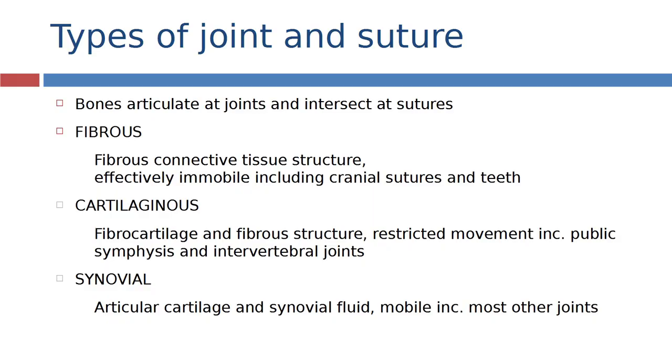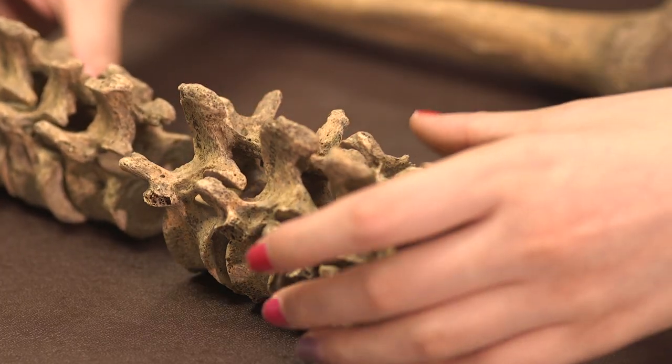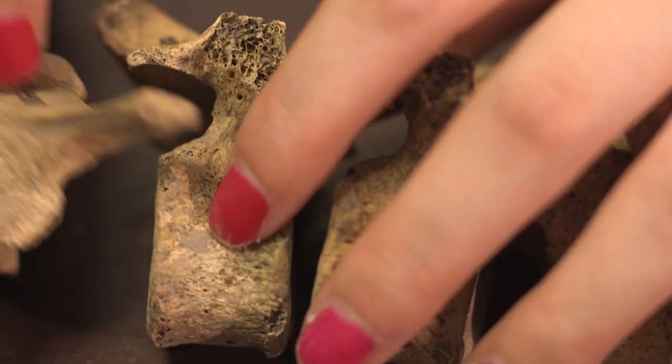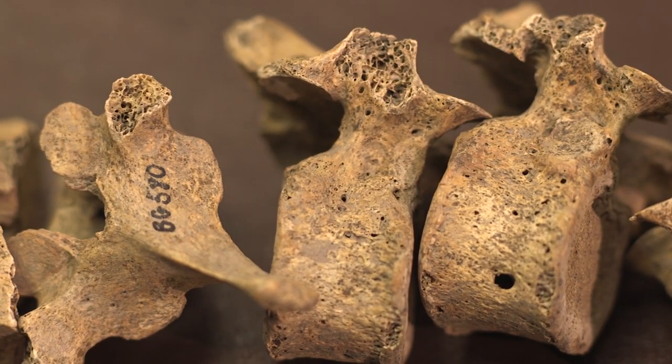There are a set of joints called cartilaginous and they're categorized by the fact that the soft tissue structures are composed of fibrocartilage and fibrous tissues. They have reasonably restricted movement. One example is the pubic symphysis which sits right at the front of the pelvis and also the joints between the vertebrae. They don't really move a great deal but they are characteristically and biologically slightly different than the fibrous joints.